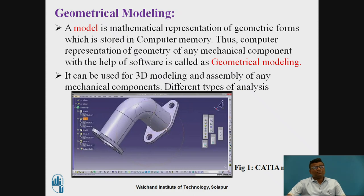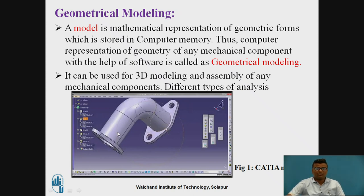But before analysis, we have to mesh the different components to get the discretization — that is, to create the nodes and the elements. For meshing different components, suppose you want to provide meshing on this pipe or elbow, you can do so with the help of different softwares like HYPERMESH or ANSYS.